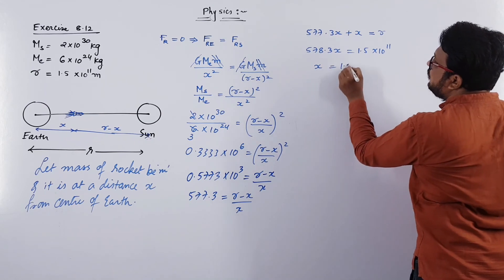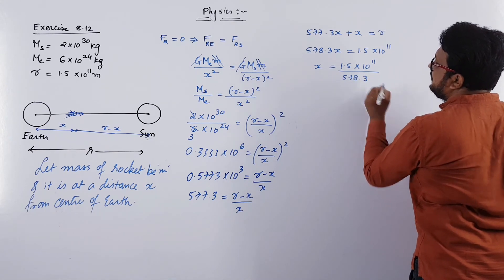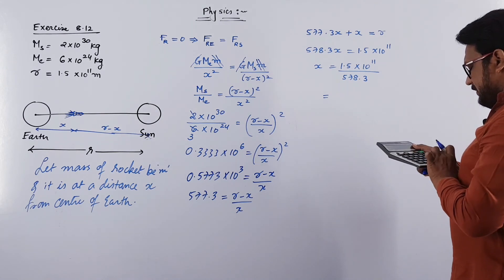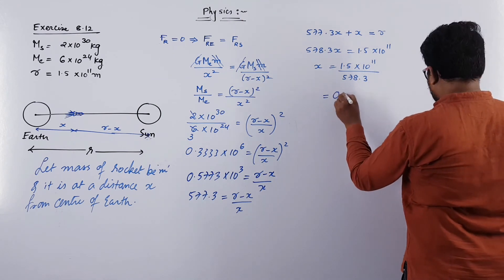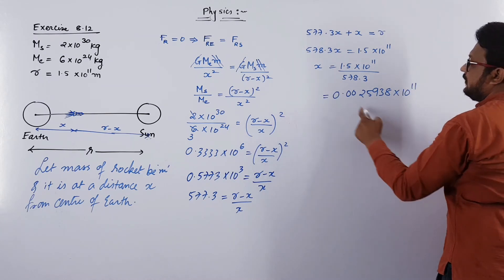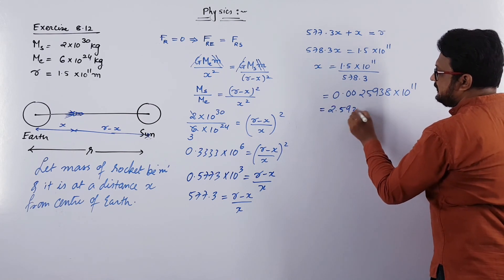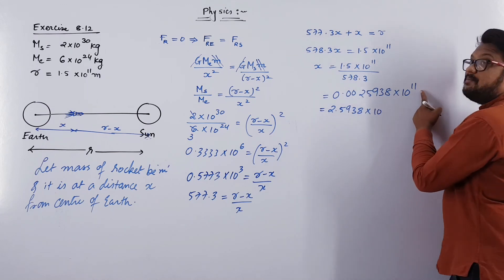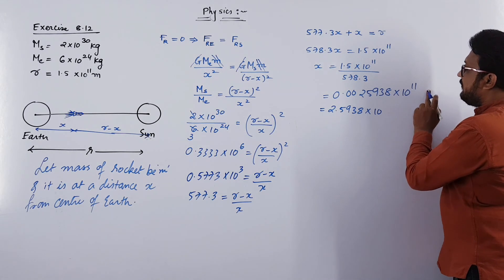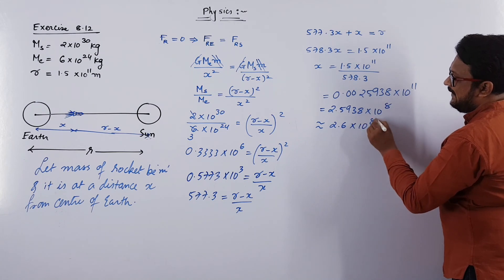So x equals 1.5 × 10¹¹ divided by 578.3. Computing 1.5 / 578.3 gives approximately 0.0025938, so x equals 0.0025938 × 10¹¹. Shifting the decimal point three places gives 2.5938 × 10⁸, or approximately 2.6 × 10⁸ meter.